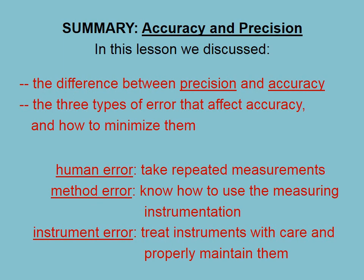So let's summarize. In this lesson, we discussed the difference between precision and accuracy and the three types of error that affect accuracy and how to minimize them. Human error, you minimize by taking repeated measurements. Method error, you minimize by knowing how to use the measuring instrumentation properly. And you minimize instrument error by treating instruments with care and properly maintaining them.